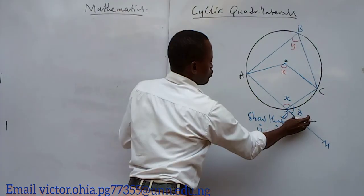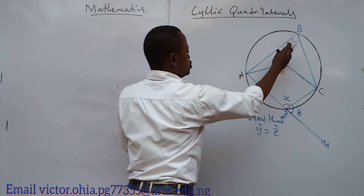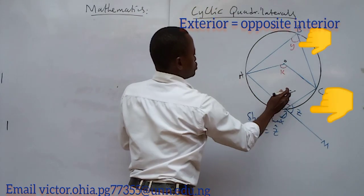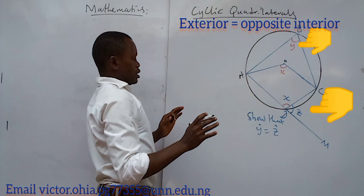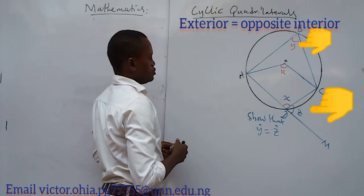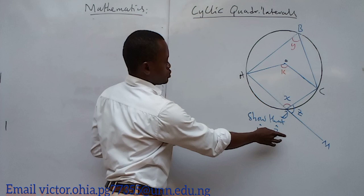So this external angle of it is equal to the opposite interior. As soon as you enter here from here, what is standing opposite is this. How are we going to show that theorem that this y is equal to z?